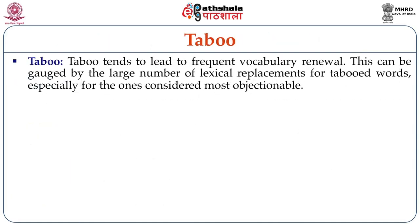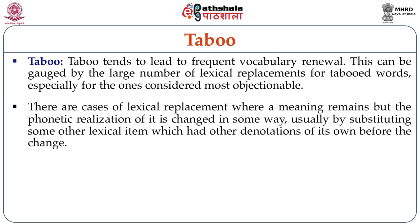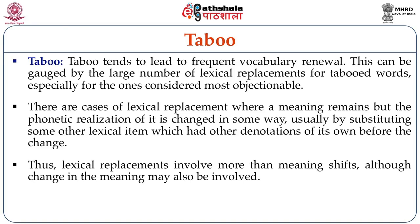Another important area wherein we lose a lot of vocabulary is called taboo — the unfavorable interpretations and connotations which come to words. Taboo tends to lead to frequent vocabulary renewal. This can be gauged by the large number of lexical replacements for tabooed words, especially for those considered most objectionable. There are cases of lexical replacement where a meaning remains but the phonetic realization of it is changed in some way, usually by substituting some other lexical item which had other denotations of its own before the change.